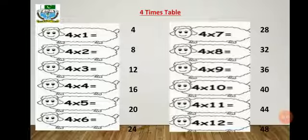Now it is time to learn the 4 times table. Here you can see some sheep, and each sheep has 4 legs. Let's learn the times table together: 4 ones are 4, 4 twos are 8, 4 threes are 12, 4 fours are 16, 4 fives are 20, 4 sixes are 24, 4 sevens are 28, 4 eights are 32, 4 nines are 36, 4 tens are 40, 4 elevens are 44, and 4 twelves are 48.